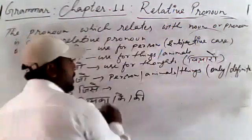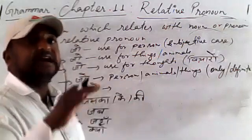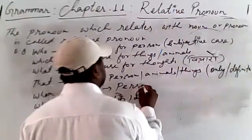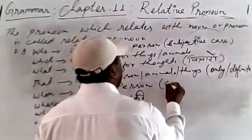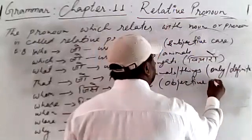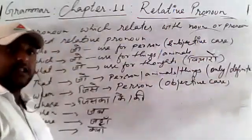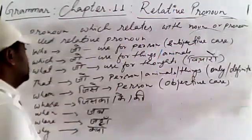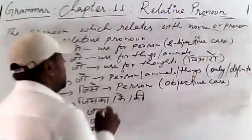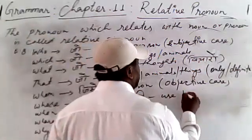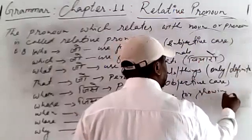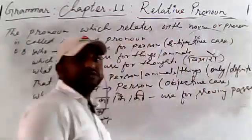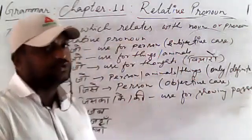Whom is used for persons as the objective case. Today we learned whose — jiska, jiske, jiski — it is used to show possession, adhikar dikhane ke liye. When = jab, it is used for time.